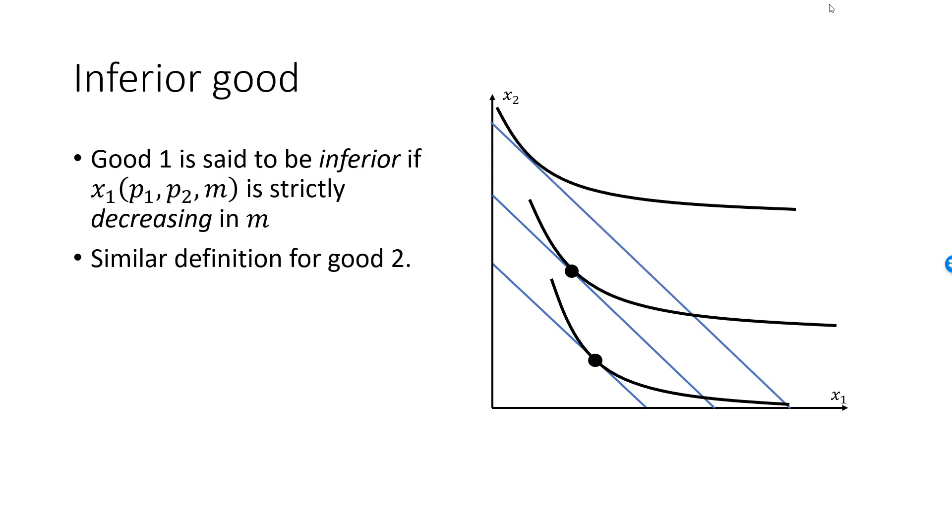And even higher income will reduce consumption of good 1 even more. So inferior goods are goods we tend to consume when our income is low. As an example, good 1 could be a cheap type of cola while good 2 was Coca Cola. With a low income, consumption of the cheap type is large while as income increases, the consumer switches away from the cheap type of cola.